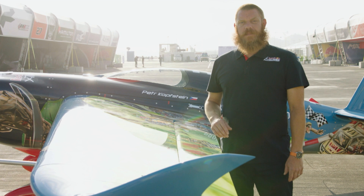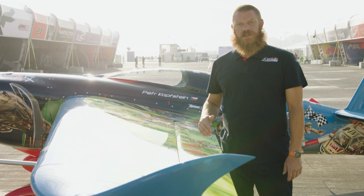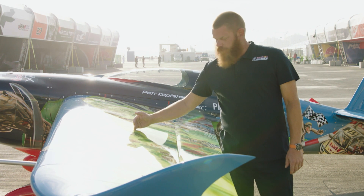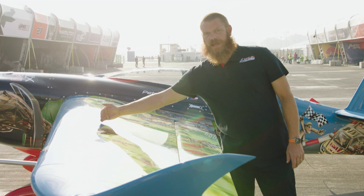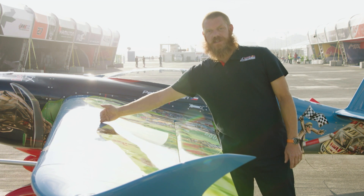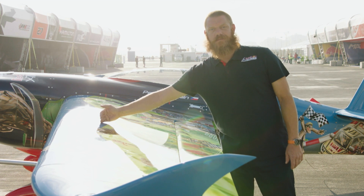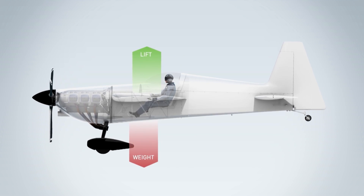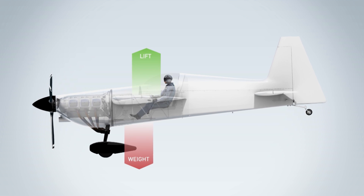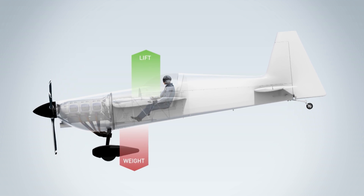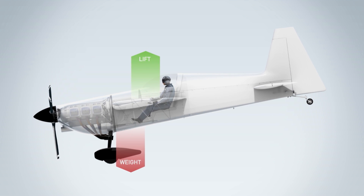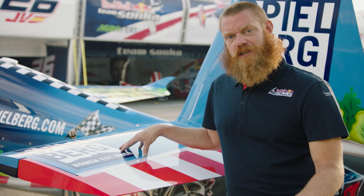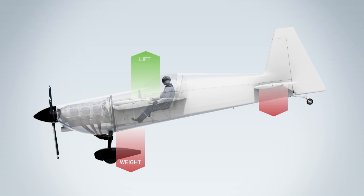There's a misalignment between these two forces. The lift being produced by the wing is a bit further aft than the weight of the aircraft and the CG point. The misalignment of these two forces would cause the aircraft to pitch nose down. In order to counteract that and make the aircraft flyable, the horizontal tail must produce a downforce.